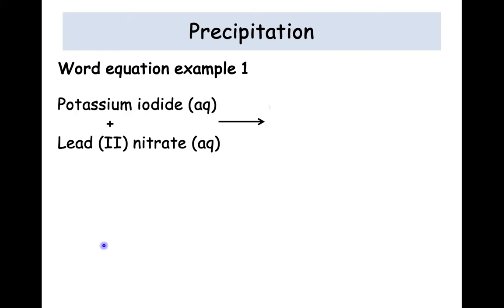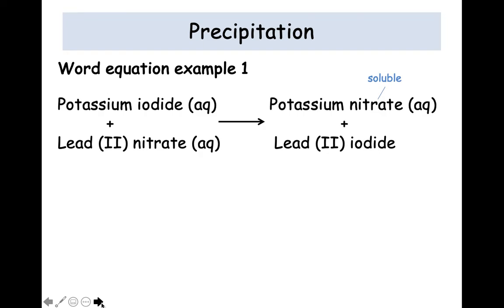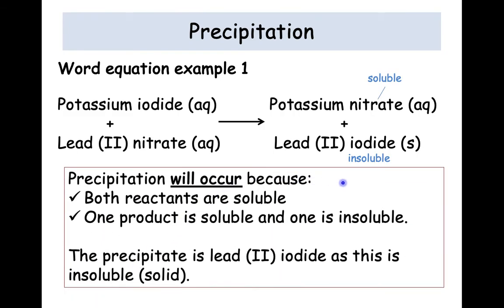So next stage is swapping your metal names over and you will get products. So if we take potassium and lead, swap them, you should find that you get potassium nitrate and lead (II) iodide. So it's literally just swapping places. So then taking each of those new products, we want to decide are they soluble or insoluble. So again, using the data book, potassium nitrate is soluble. Therefore, we put AQ. Lead (II) iodide is insoluble, so we put an S for solid, which would form in your beaker. So in this case, you will find that precipitation will occur for this reaction because both reactants are soluble, one product is soluble and one is insoluble. And the precipitate in this example is lead (II) iodide.